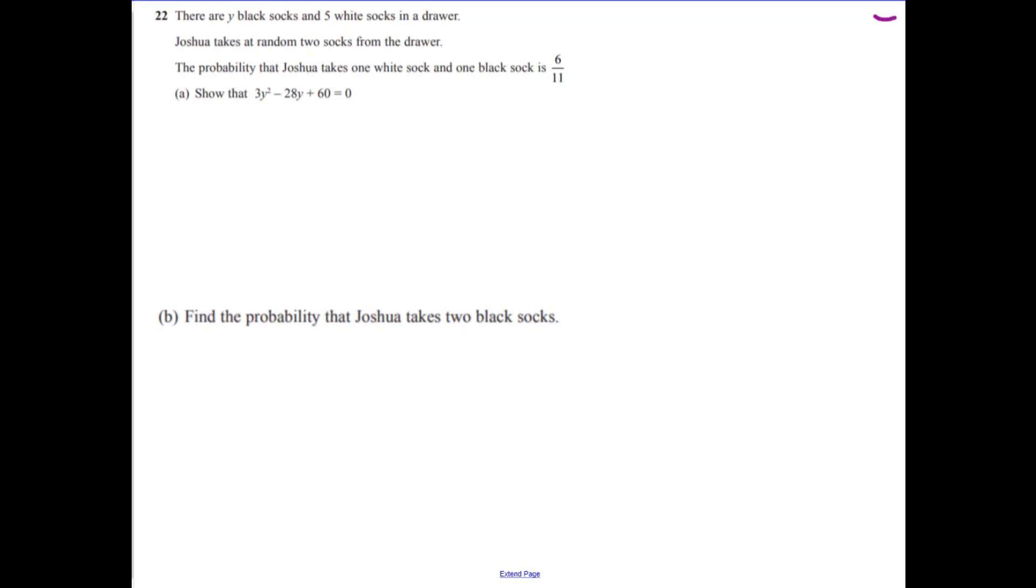Question 22 might help to think of a little tree diagram. We take out two socks, so we've got black, white, black, white, black, white. The question is, the probability that Joshua takes one white sock and one black sock is 6 over 11, so that's these two branches here.